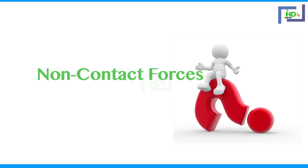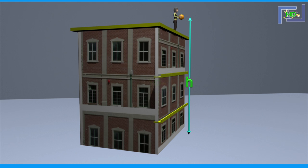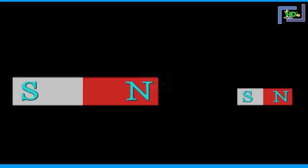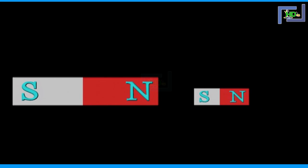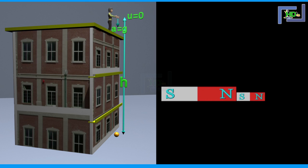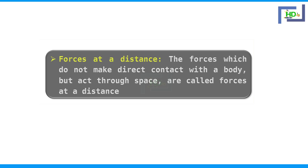Now the question is: can you find non-contact forces — forces which act on a body from a distance? Consider an object at some height — when we drop it, it is pulled towards the earth because of the gravitational force of the earth. Similarly, if a small magnet is placed nearer to a larger magnet, it will be attracted by the larger magnet — here there is no contact; this is magnetic force. So force can act at a distance. Forces which do not make direct contact with a body but act through space are called forces at a distance.